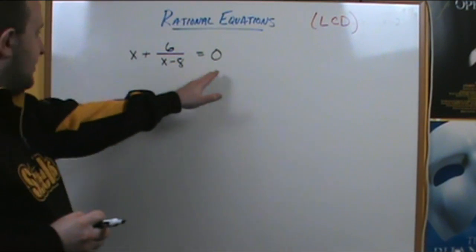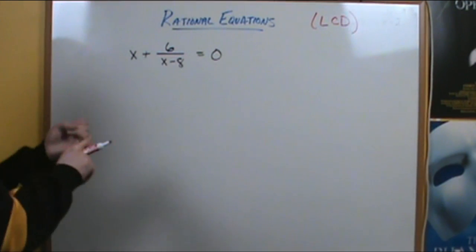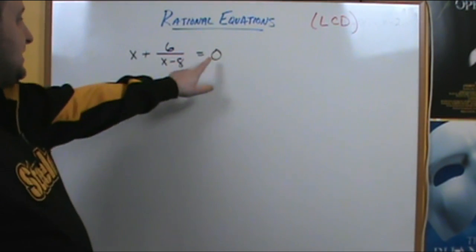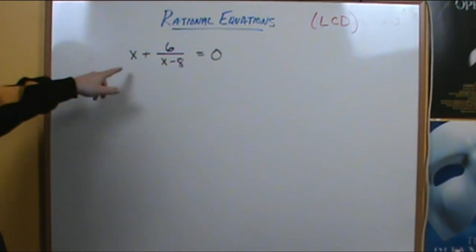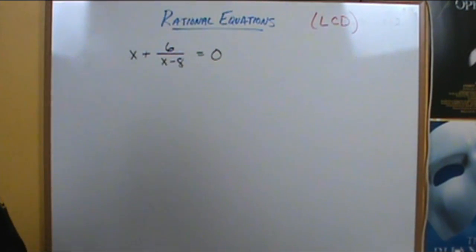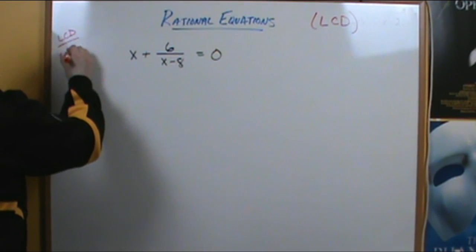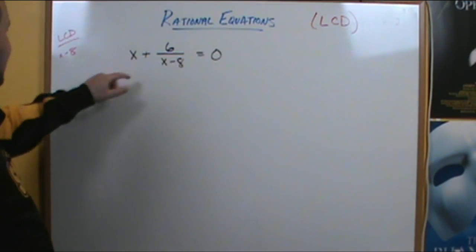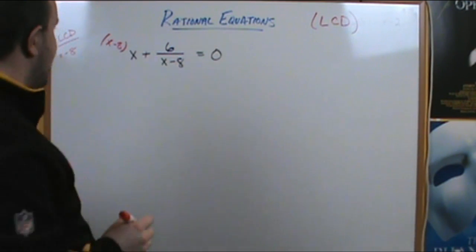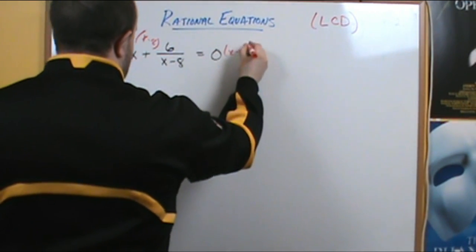Looking at this first example: x plus 6 divided by x minus 8 equals 0. We're first going to find the least common denominator. The denominator of the first term is 1, the denominator here is x minus 8, and the denominator of 0 is just 1. So our LCD is just x minus 8. We're going to multiply x by x minus 8, multiply 6 divided by x minus 8 by x minus 8, and multiply 0 by x minus 8.